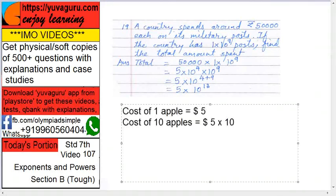Quite easy. Cost of 1 apple equals to $5, so cost of 10 apples equals to 5 into 10. Same logic over here. 1 post costs 50,000, so 10 raise to 9 posts means multiplication, 5 into 10 raise to 9.